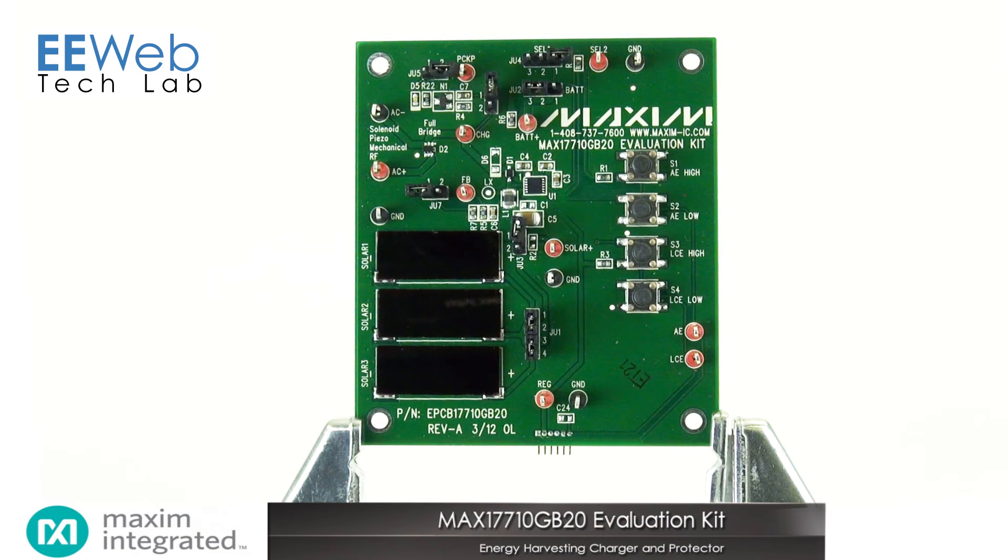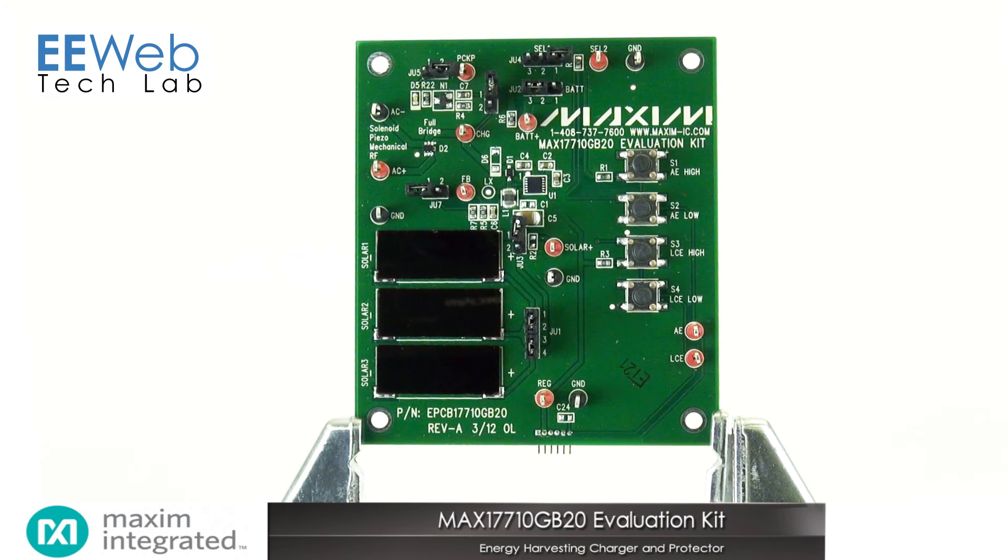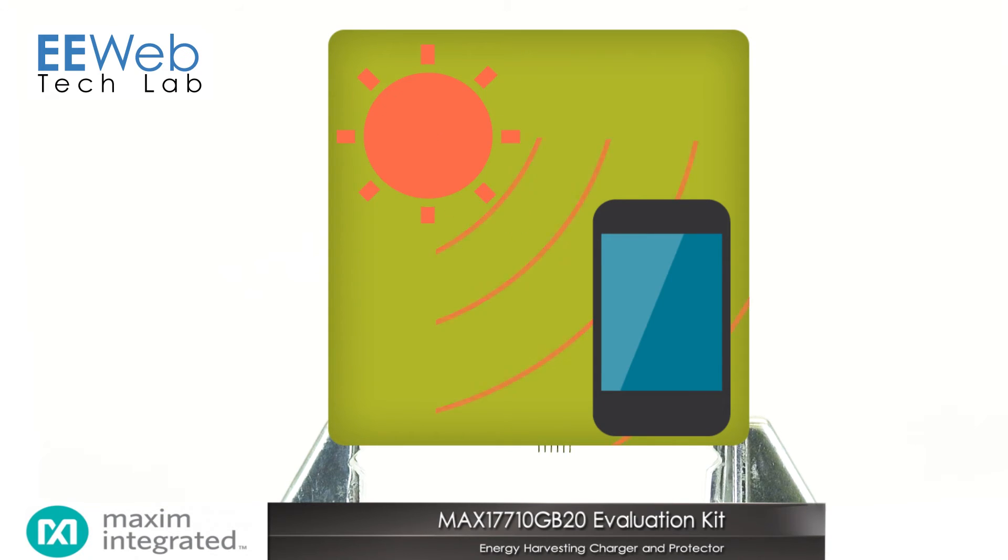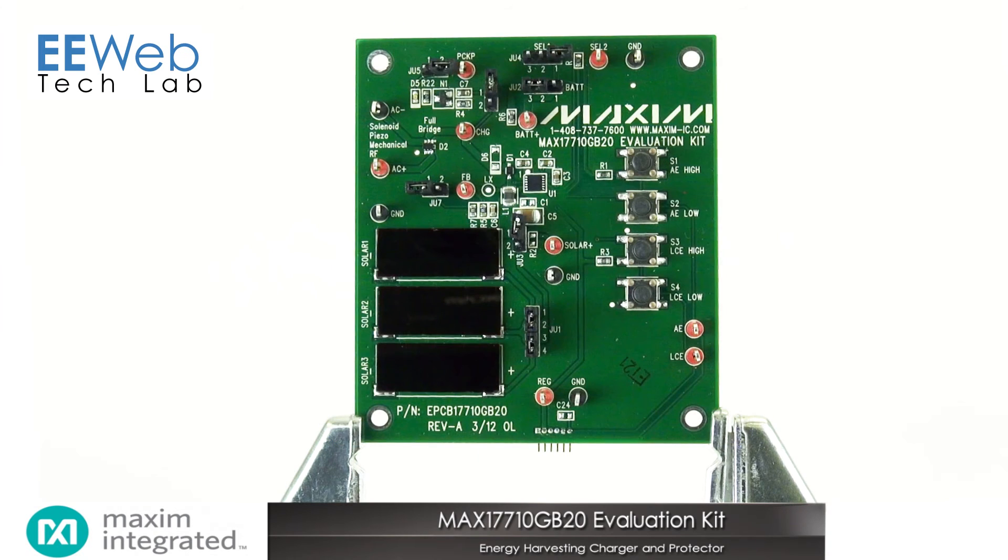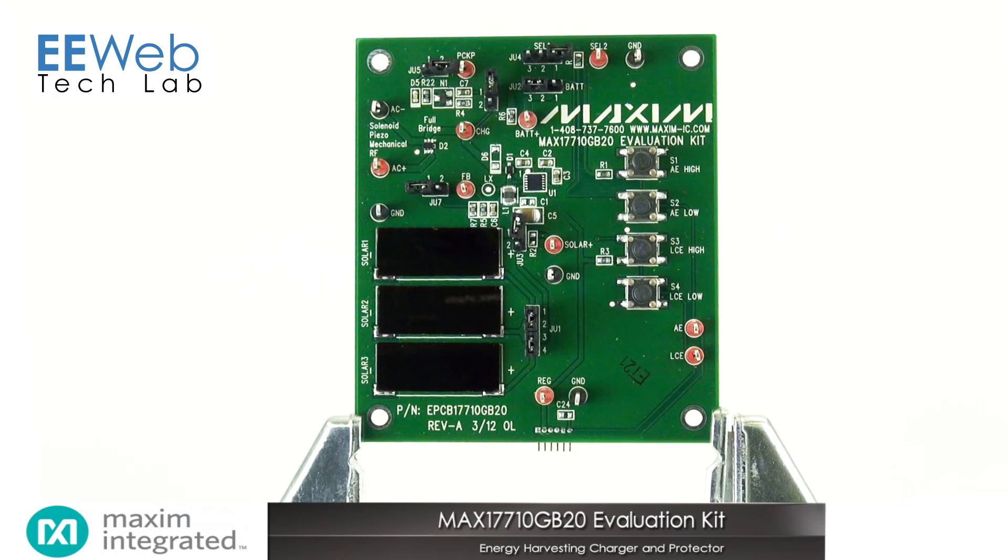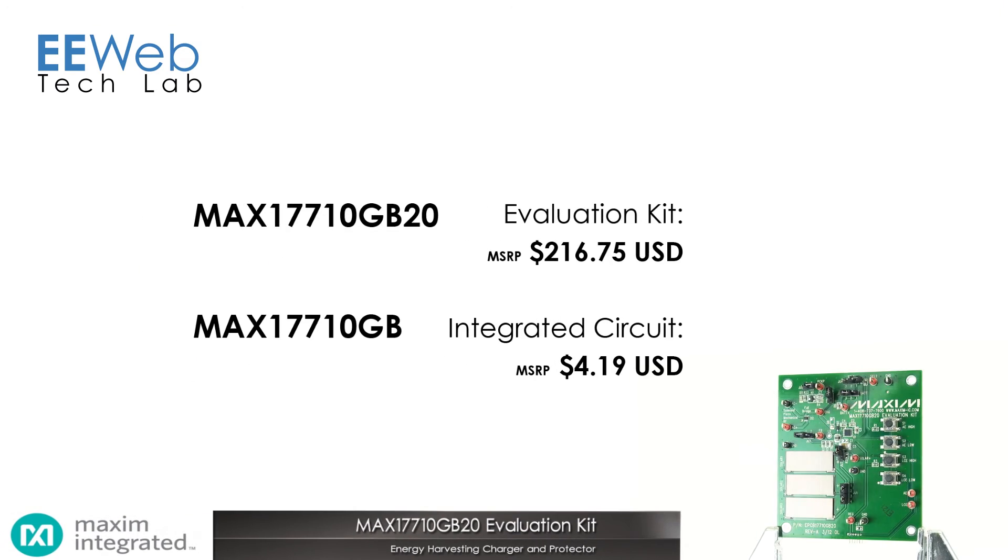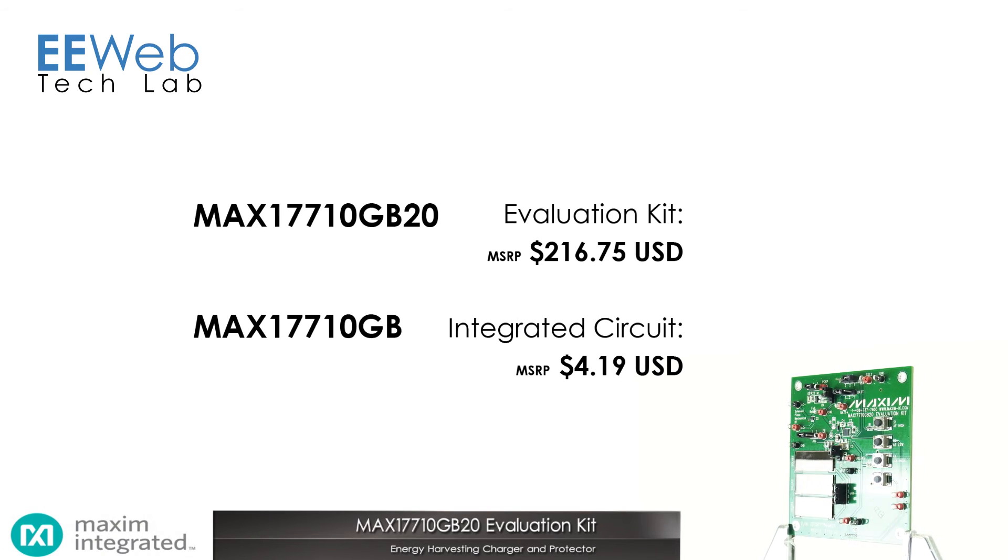In conclusion, the MAX17710 GB20 Evaluation Kit is a great starting point if you're going to be using an energy harvesting application. The IC itself is very compact in size with an LDO regulator on output with selectable voltages. The kit costs about $200 and the IC itself costs about $4.